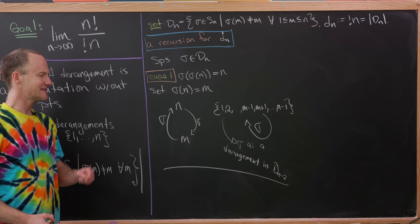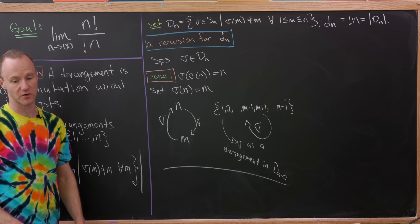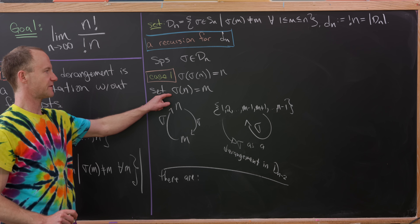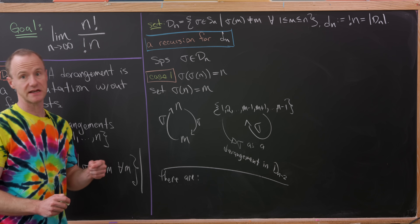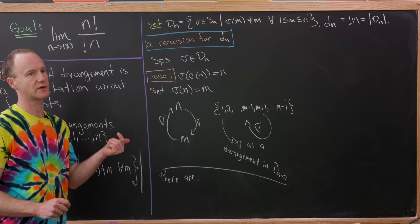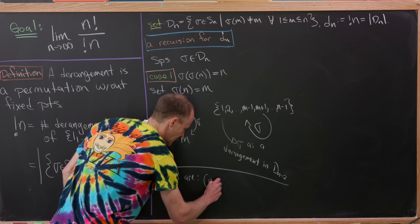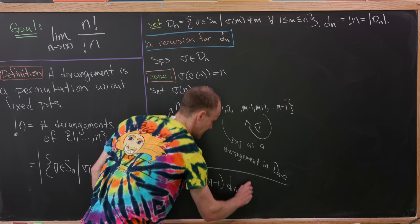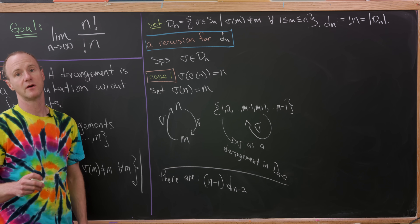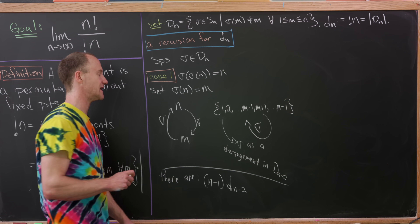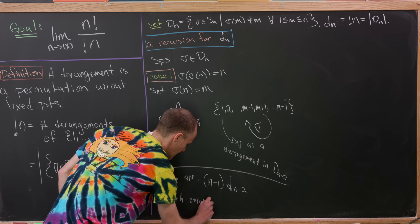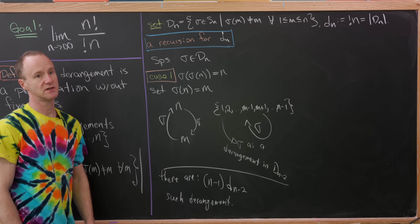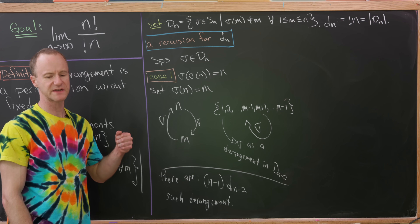Let's count how many derangements lie in this first case. There are n−1 places to send n — we can't send n to itself because it's a derangement, so n can go to 1, 2, …, n−1. And there are d_{n−2} derangements on the remaining set. By the multiplicative property, there are (n−1)·d_{n−2} derangements of this type — meaning elements of D_n where σ composed with itself sends n to n.